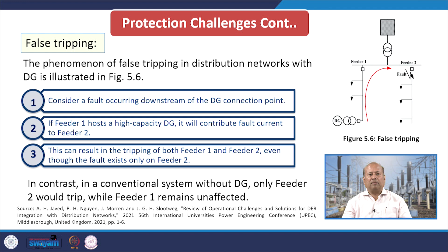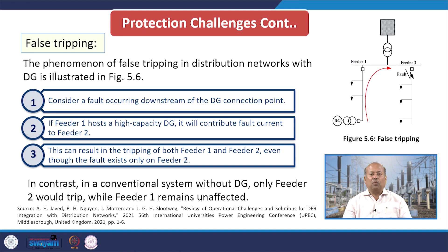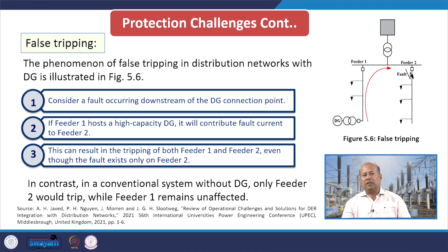Regarding false tripping, as seen from diagram 5.6: it considers a fault current downstream of the DG connection point. If feeder 1 hosts a high capacity DG, it will contribute fault current to feeder 2. This can result in the tripping of both feeder 1 and feeder 2 even though the fault exists only on feeder 2. In a conventional system without DG, only feeder 2 would trip while feeder 1 remains unaffected — this is how false tripping may happen due to DG integration.